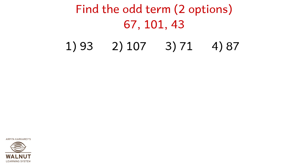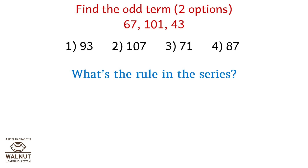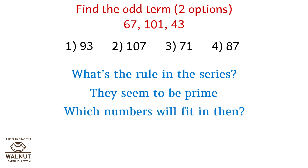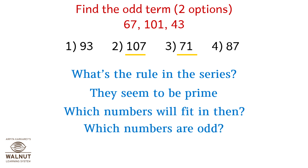Find the odd term — there are two options in this series. The given numbers are 67, 101, and 43. The rule is they seem to be prime. Numbers that fit include 107 and 71. So which numbers are odd? 93 and 87.